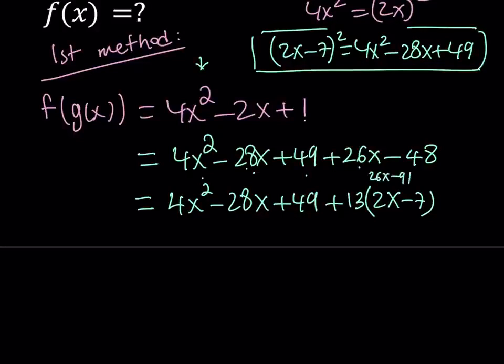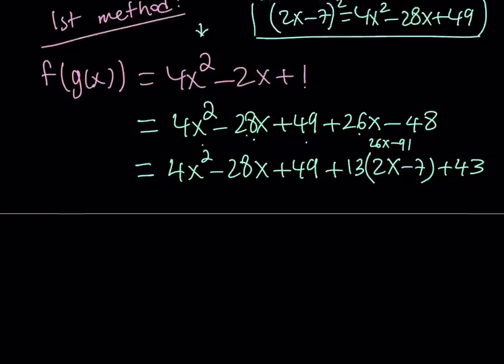So this equals 26x minus 91. But we have 26x minus 48, so to turn it into negative 48 we have to add 43. We were able to take the expression f of g of x and manipulate it until we got something meaningful in terms of 2x minus 7.